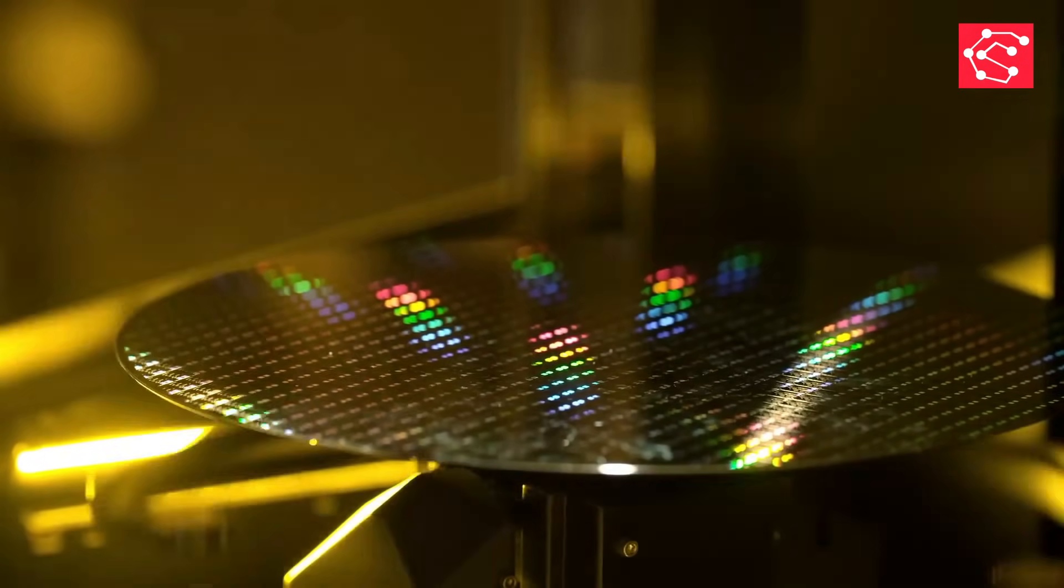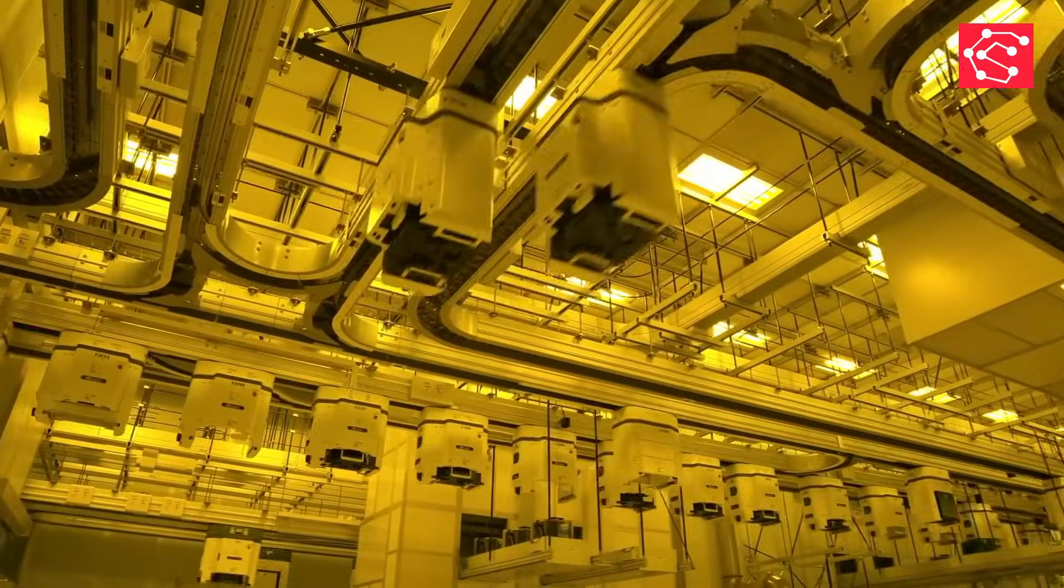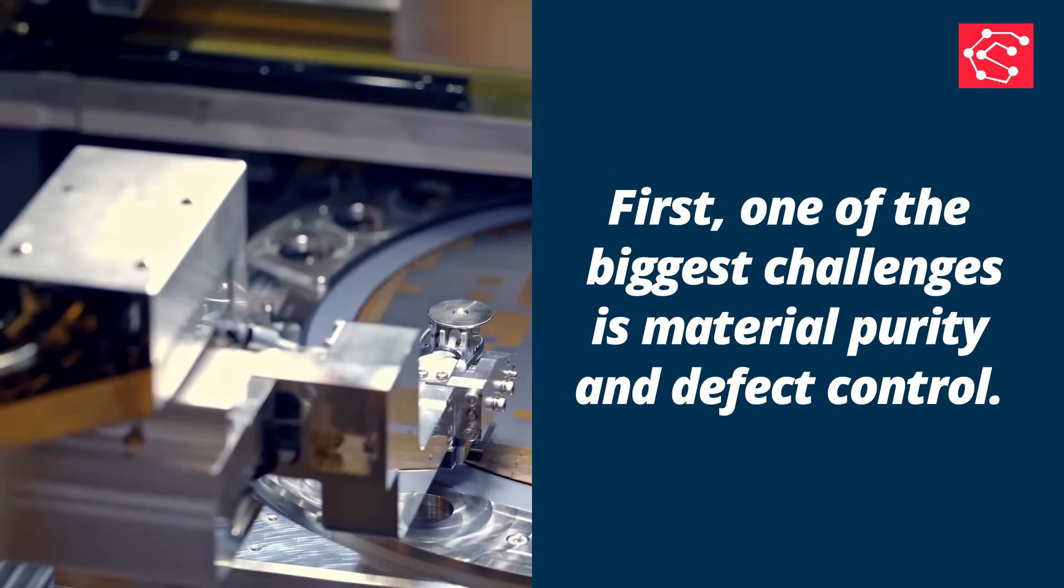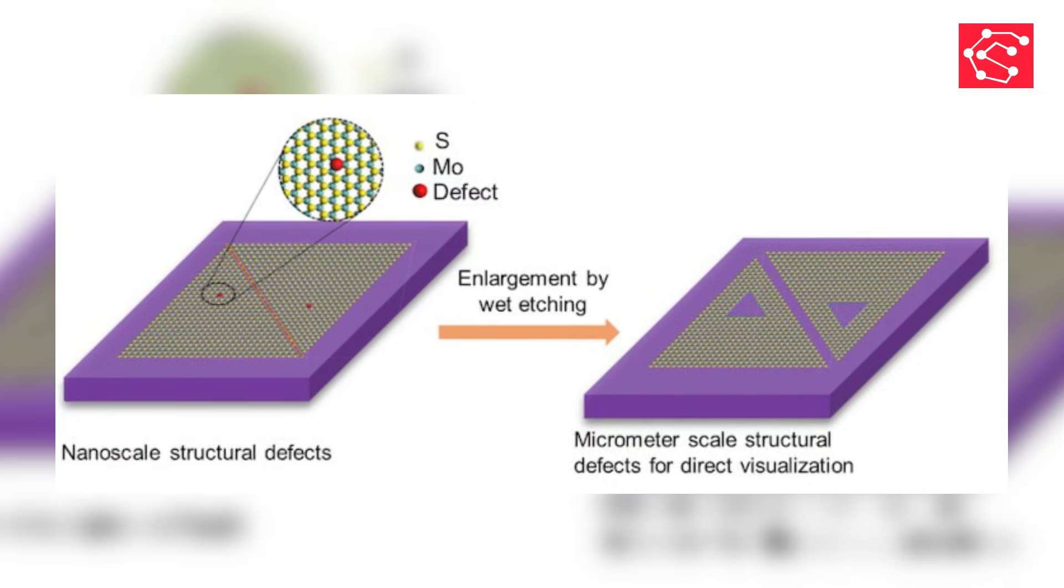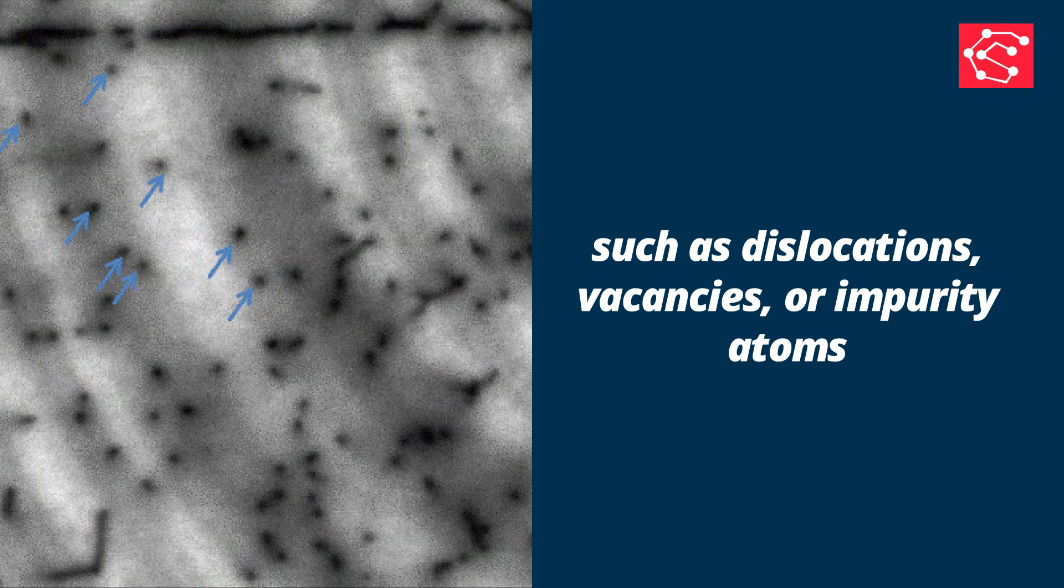Today we'll explore the four key obstacles that researchers face in the development of new semiconductor materials. First, one of the biggest challenges is material purity and defect control. At the atomic level, even the smallest defects such as dislocations, vacancies or impurity atoms can dramatically affect how a semiconductor performs.